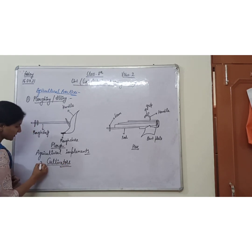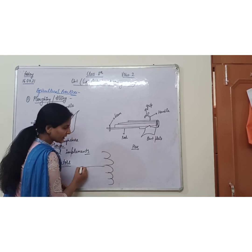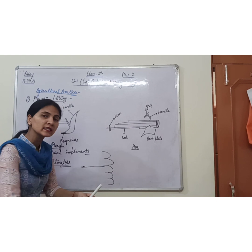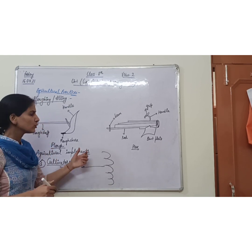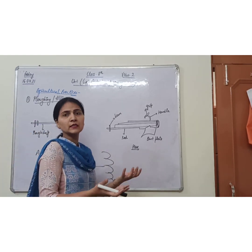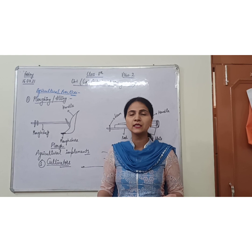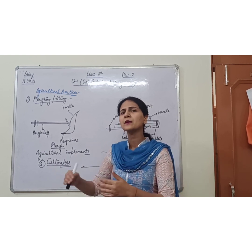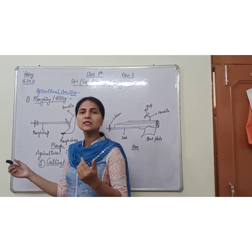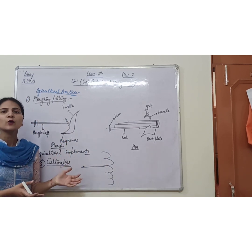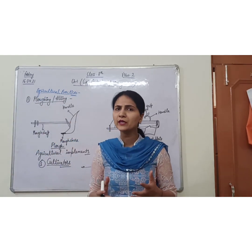Cultivators are basically tractors. There are blades behind the tractor; as the tractor runs, the blades loosen the soil and turn it. This way there is no manual effort or labour required, and it saves time too because the tractor moves quickly compared to animals or humans. Nowadays many farmers are using these cultivators. So we have learned about what plowing and tilling are.